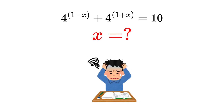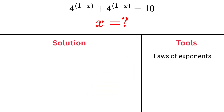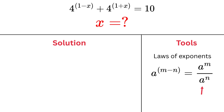Sounds tricky? Don't worry, let's break it down step by step. Step 1: Recall the laws of exponents. Before jumping in, let's quickly recall two important rules we'll be using. First, a to the power m minus n equals a to the power m divided by a to the power n. Second, a to the power m plus n equals a to the power m times a to the power n. We'll use these to simplify and transform the equation.